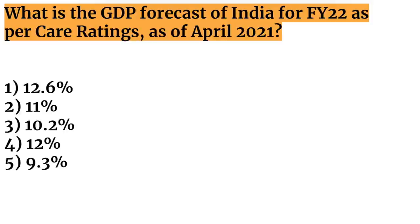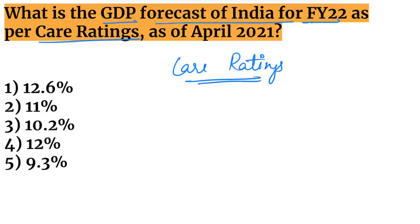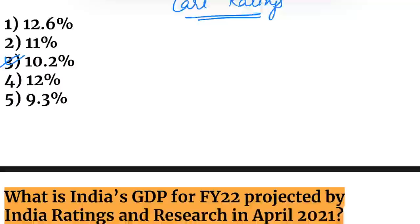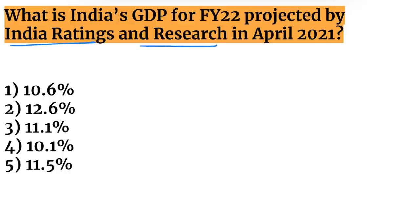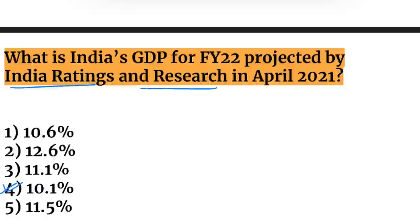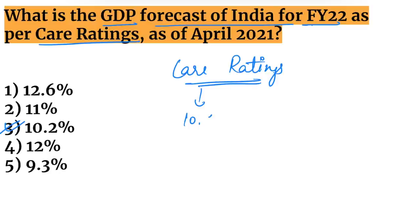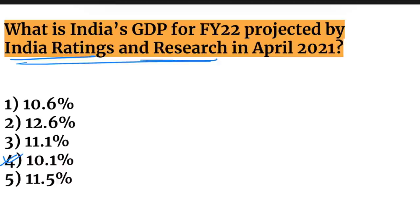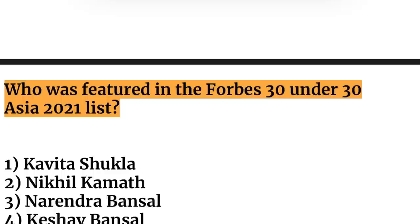Next question: what is the GDP forecast of India for fiscal year 2022 as per Care Ratings? Care Ratings projected India's GDP at 10.2% for FY2022. Indian Ratings and Research projected it at 10.1% for FY2022. Do not confuse the two — Care Ratings: 10.2%, Indian Ratings and Research: 10.1%.